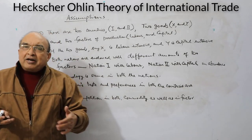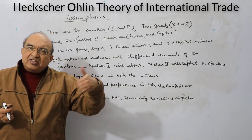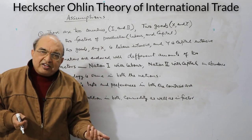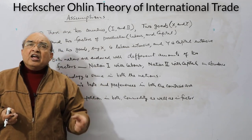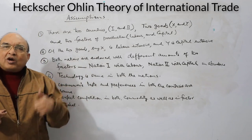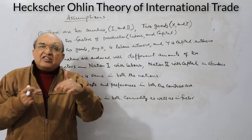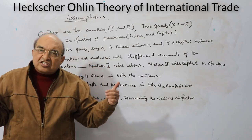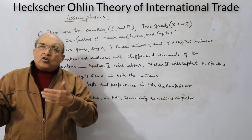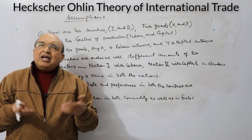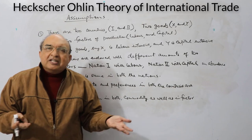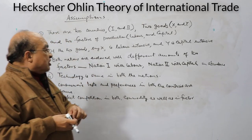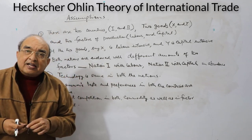Because tastes and preferences are the same, it is possible to draw a common indifference curve applicable to both nations. There is also perfect competition in both commodity markets and factor markets in both countries — product markets as well as factor markets are perfectly competitive.